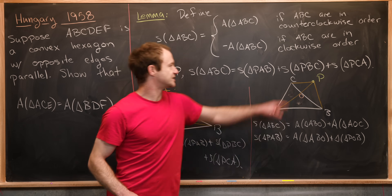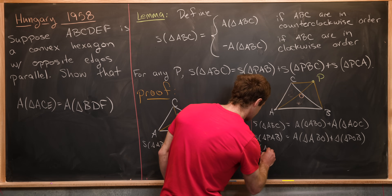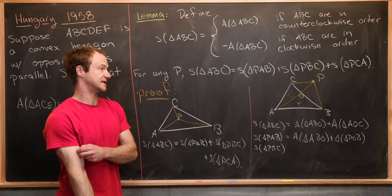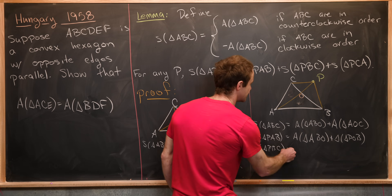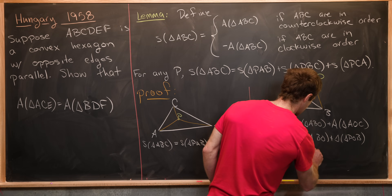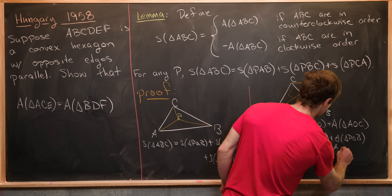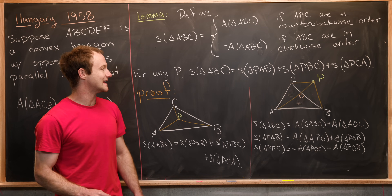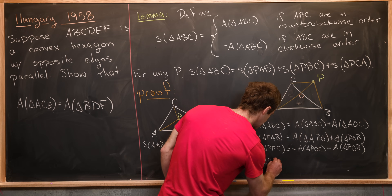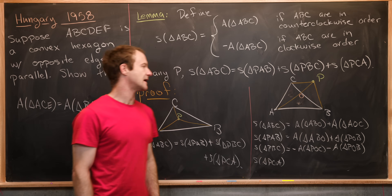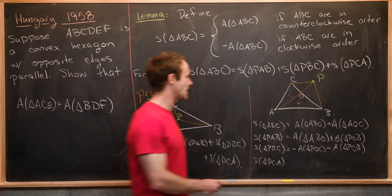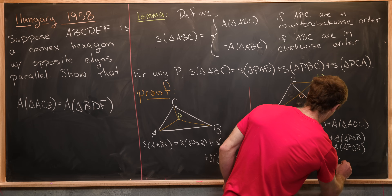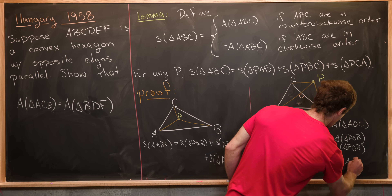Next, S of triangle PBC: since PBC are oriented in clockwise orientation, we pick up a minus sign, giving minus the area of triangle POC minus the area of triangle POB. Finally, S of triangle PCA: the vertices PCA are in counterclockwise orientation, so we get positive areas — the area of triangle PCO plus the area of triangle AOC.